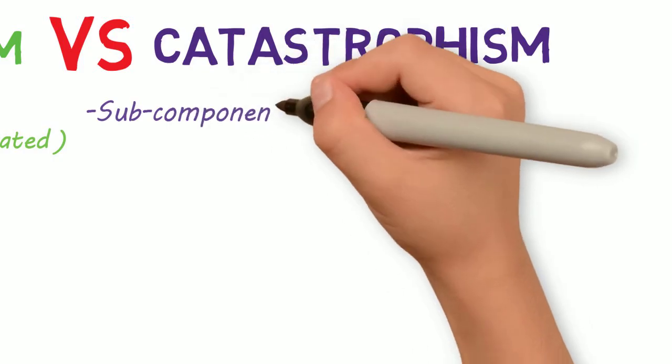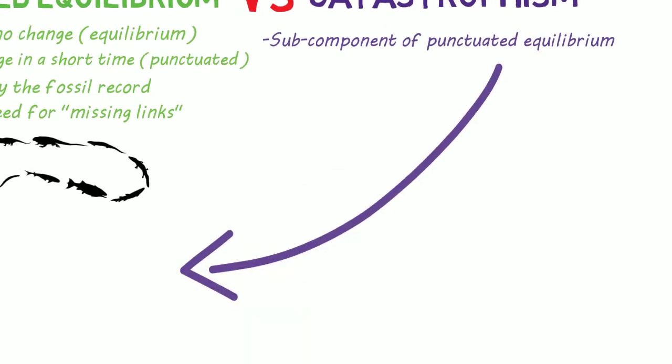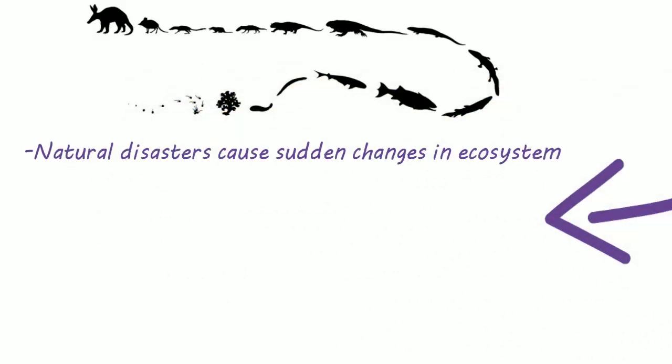Catastrophism is a subcomponent of punctuated equilibrium, so it fits under that heading. When you have natural disasters that cause sudden changes in an ecosystem, then those changes result in rapid evolution by new species moving in and adapting and taking over that ecosystem, and that's catastrophism.